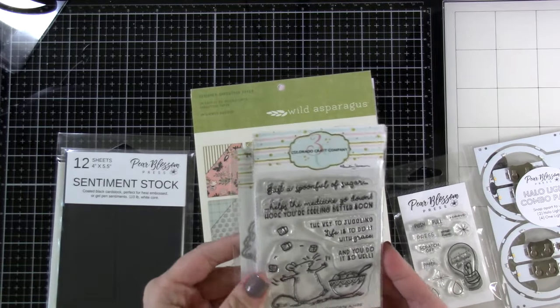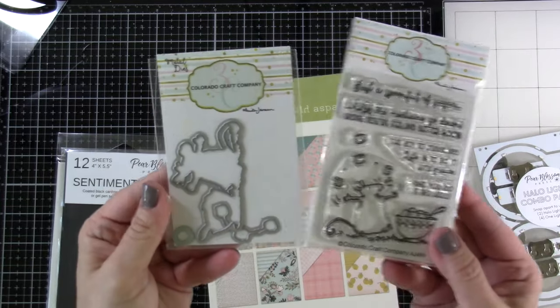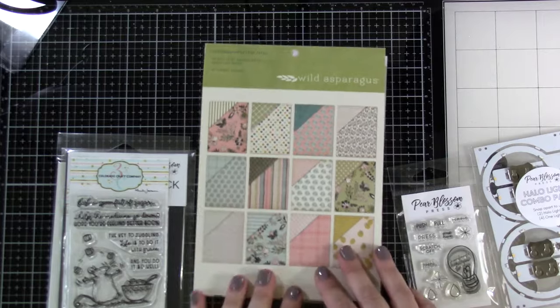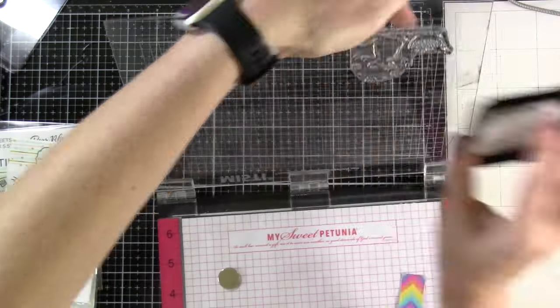We're going to be using this adorable stamp set called Spoonful of Sugar from Colorado Craft Company, and then I do have the matching die to go along with it. I have this pattern paper from my stash, Wild Asparagus from My Mind's Eye, so let's go ahead and get started.